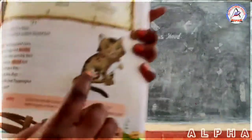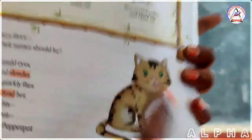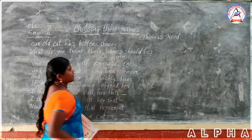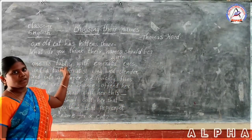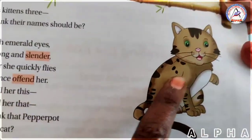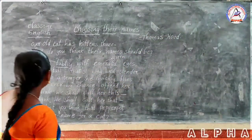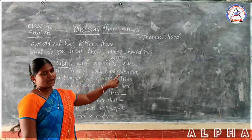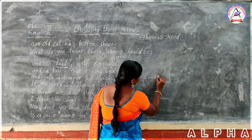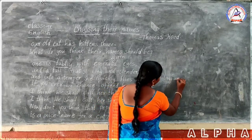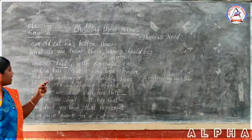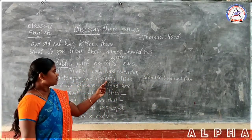And this cat has emerald eyes. Emerald means green-colored eyes. What is the color of this cat's eyes? Green. And she has a tail that is long and slender. Slender means long and thin. And into a temper she quickly flies.